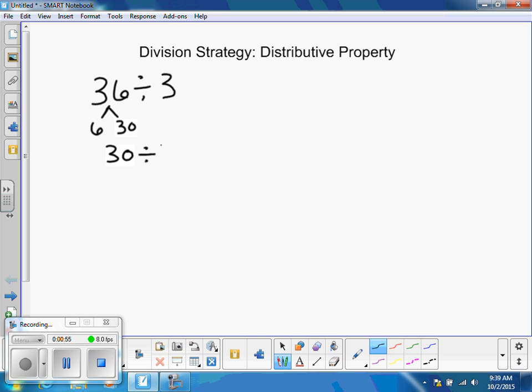30 divided by 3, I know it's 10. Then the 6 divided by 3, I know it's 2. Now I've actually taken 36 and I've divided it by 3 and I see that it is 12. There are 12 groups of 3 in 36. So 36 divided by 3 is equal to 12.